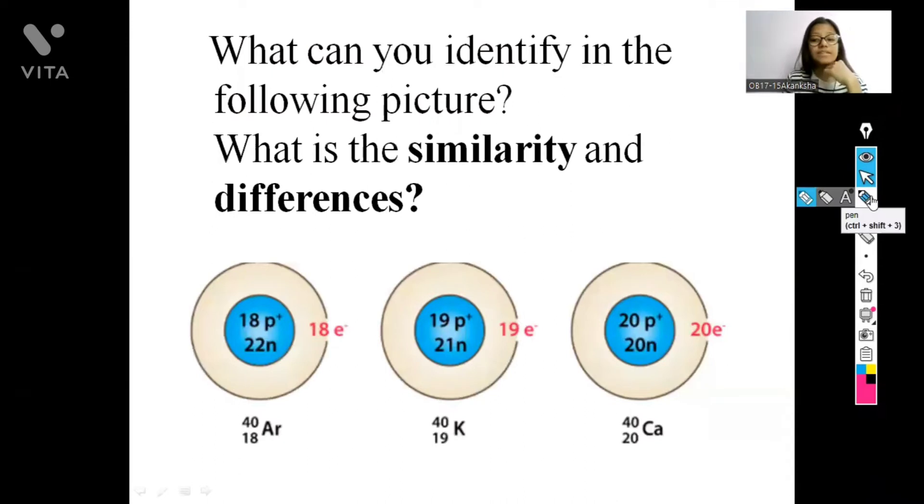we will see these pictures. In this picture, what you have to do is you have to identify like what are the similarities in all these atomic structures of different elements like in argon and potassium and calcium. What are the similarities and what are the differences?